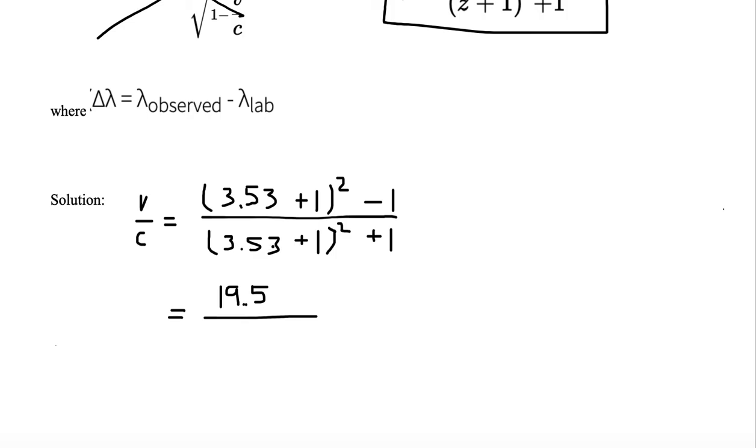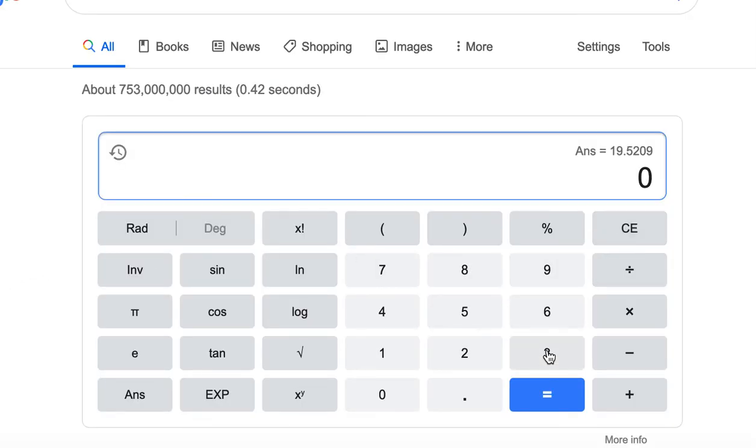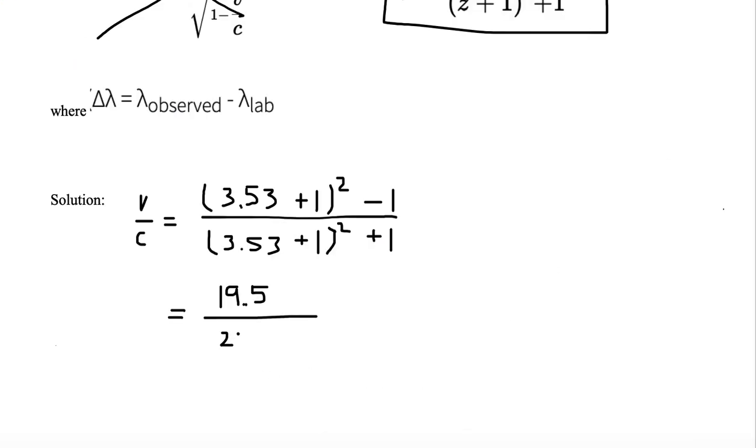Now let's go to the bottom. We have 3.53 plus 1 squared. 3.53 plus 1 equal to x to the y squared. And now it says to add 1. So now we add 1. And we have 21.5. So we put 21.5 down here.